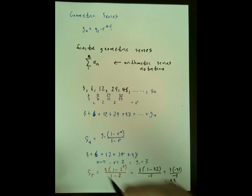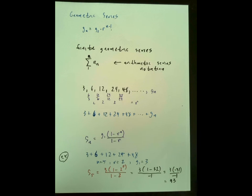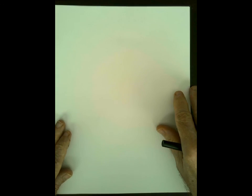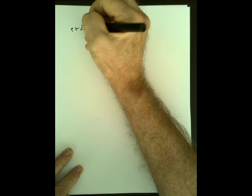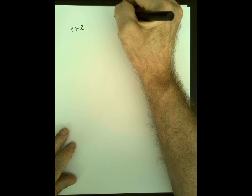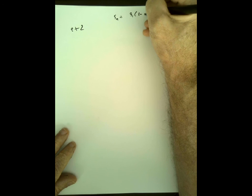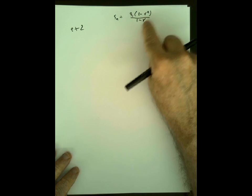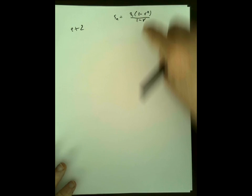Let's do a couple more examples finding sums of series. Example 2: we'll use the same formula. Writing it again at the top: S-sub-n equals g1 times (1 minus r to the n) over (1 minus r). Note that the r on top and bottom do not cancel — you'd need an n on the outside for that. There are no common factors here.